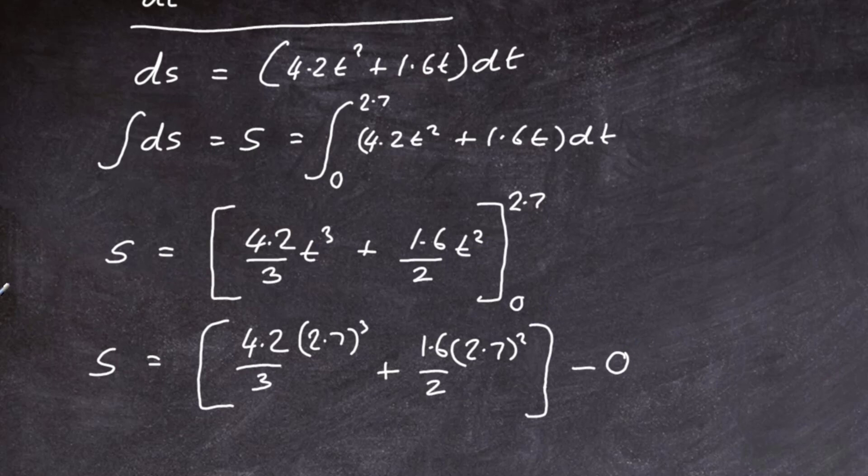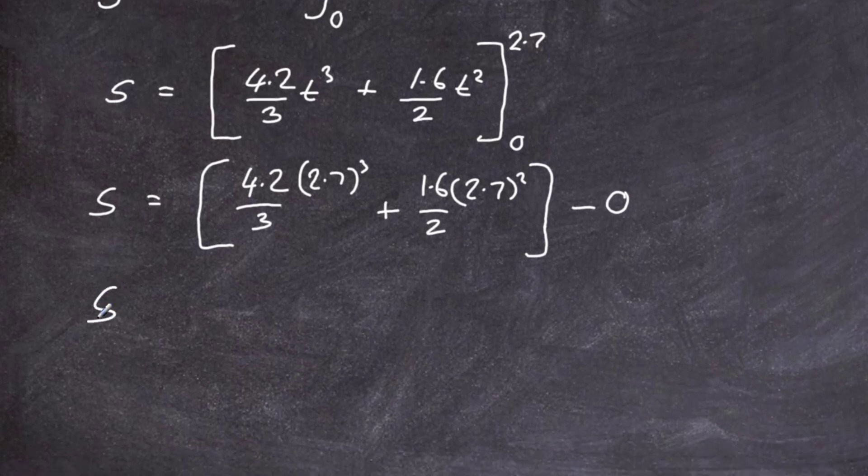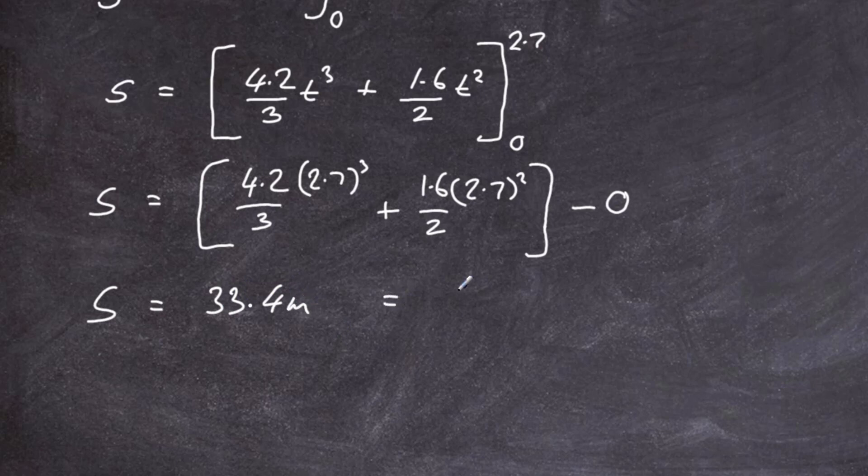So all we have to do is work out that value in our calculators, and we find the displacement S is 33.4 meters, which we can say is equal to 33 meters to two significant figures.